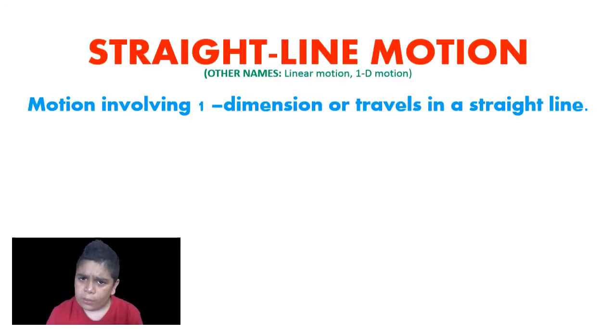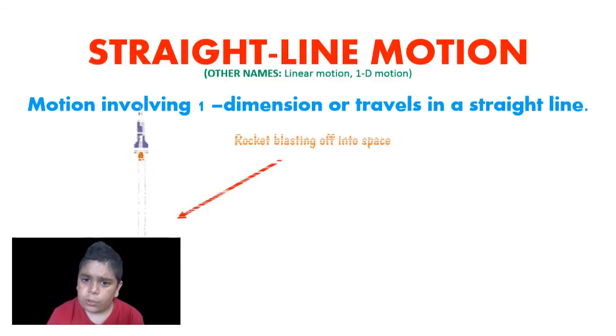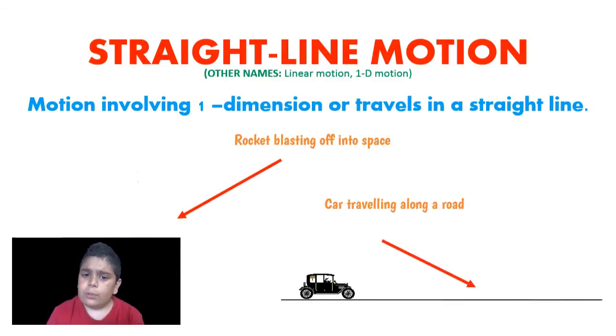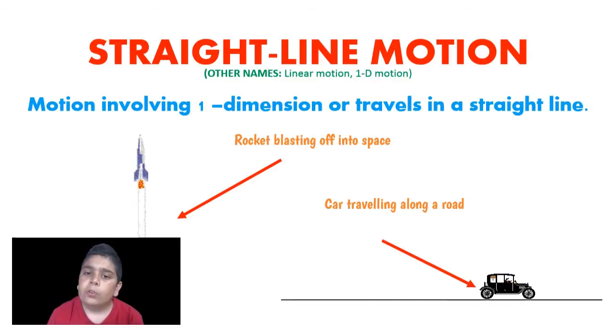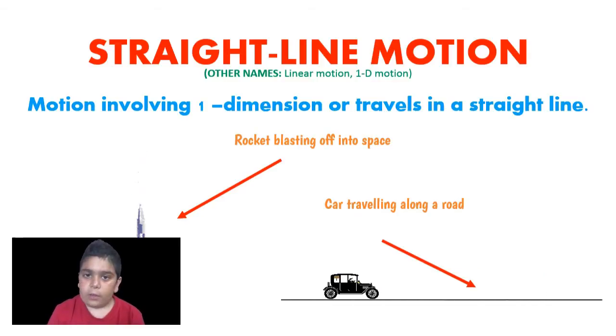There is something special to note here: one-dimensional motion, or straight-line motion, can occur along both the vertical and the horizontal axes.